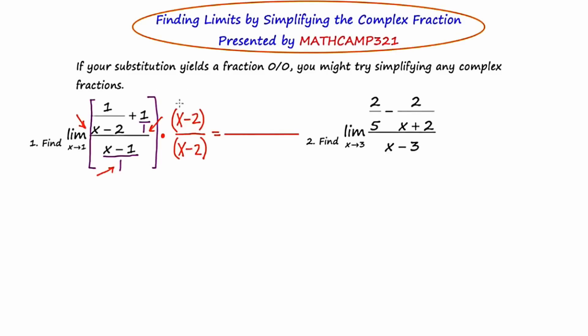Okay, so what I'm going to do first is take the expression x minus 2, and I'm going to distribute it into the top left of this complex fraction. So in other words, I've got x minus 2 times 1 over x minus 2. Now anything times its reciprocal is just 1. So I'm going to go ahead and write 1.